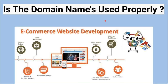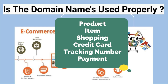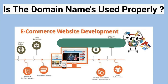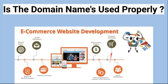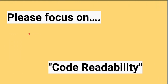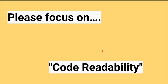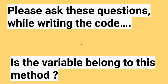The next point: are domain names used in your code properly? We are writing software for a business and a domain, so we should map the domain names in the code appropriately to support the business effectively. Examples of domain names: product, item, cart, shopping cart, tracking number. Are we using domain names appropriately in the code? Are we able to map them correctly? Understanding the domain is very important, and mapping it in code is also very important. Please focus on code readability as one of the main clean code tips.